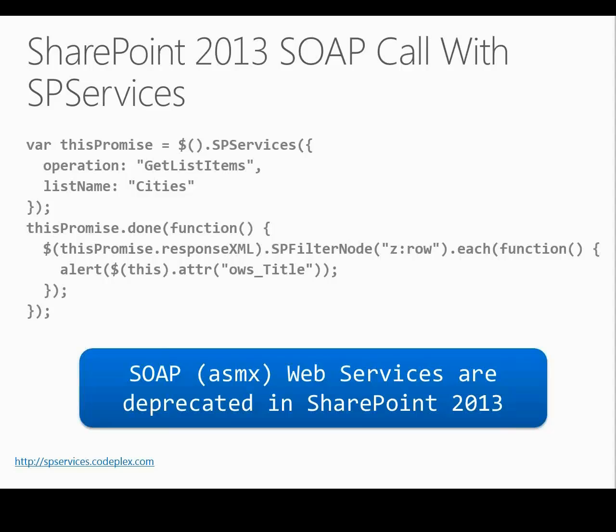So we make this call to the SOAP Web Services — and this is consistent across the three methods — we call GetListItems asking for the content in the list called Cities, and get a promise back. When that promise is done and has been filled up, we iterate through it looking for all of the items in the returned XML. The SOAP Web Services return XML, not JSON — you can't request JSON, which is part of why it's a slightly older, crustier method. In this case, we're just alerting the title attribute on each item, so we'd see all of the titles popping up in an alert. Very basic on purpose, so you can see the structure.